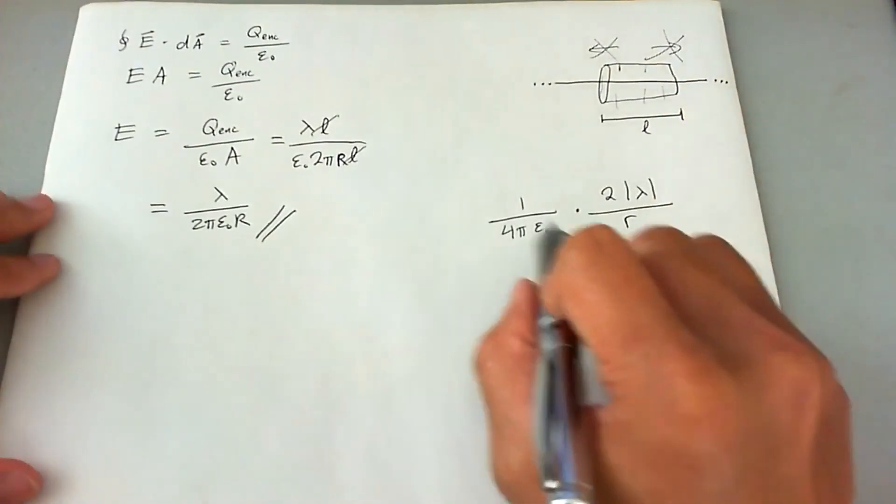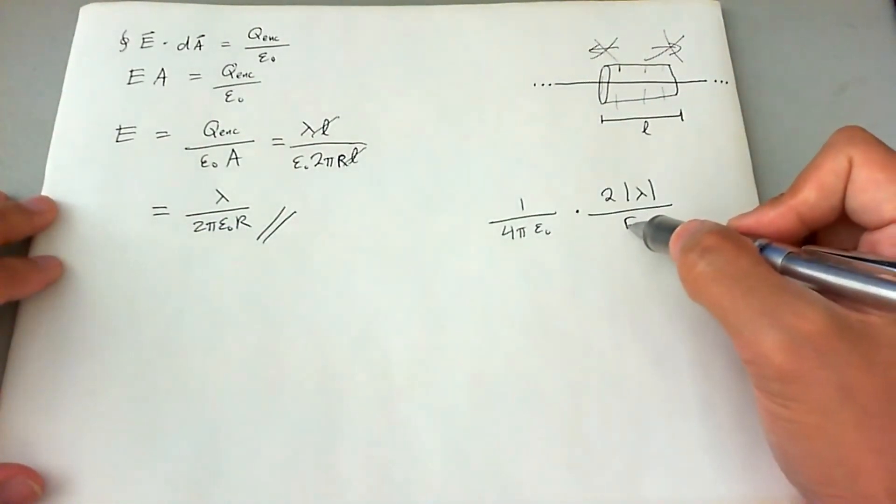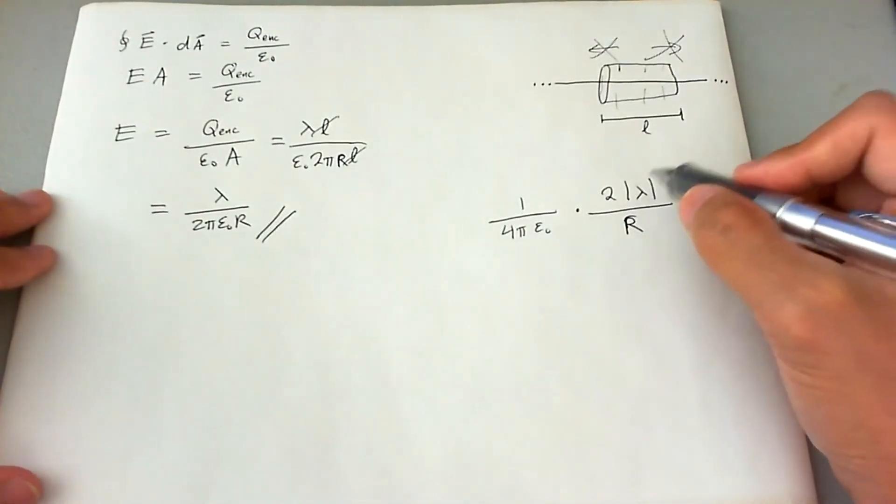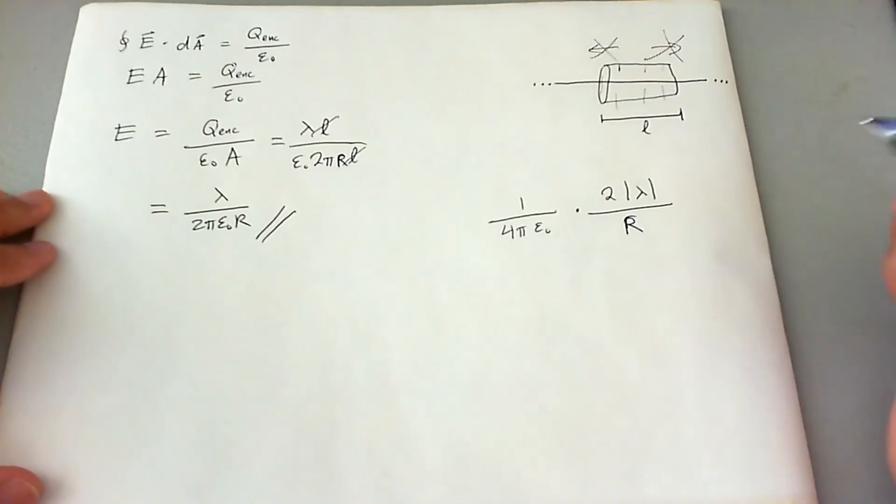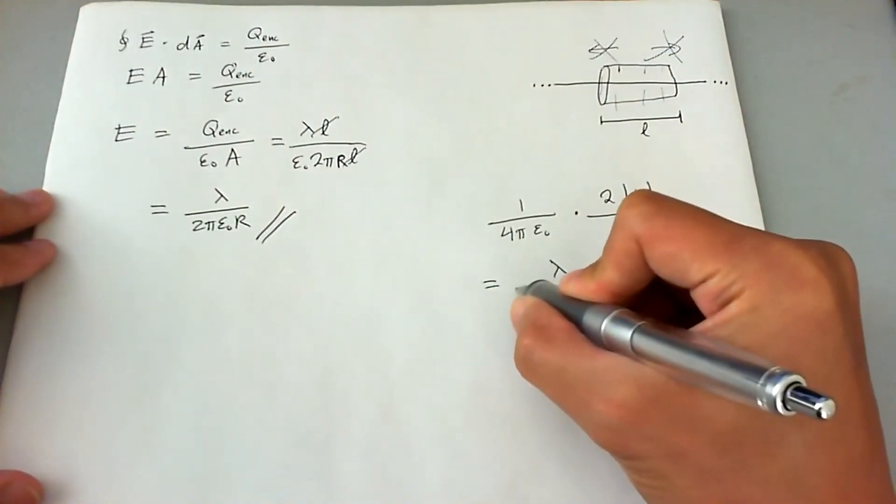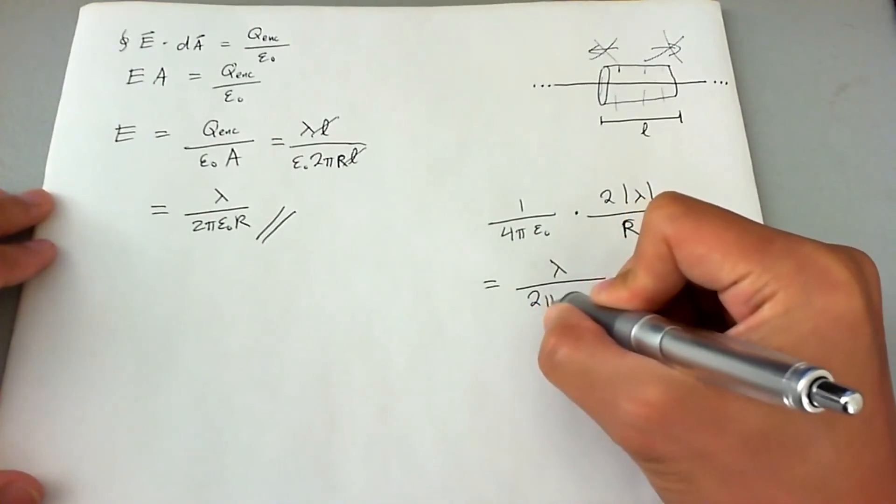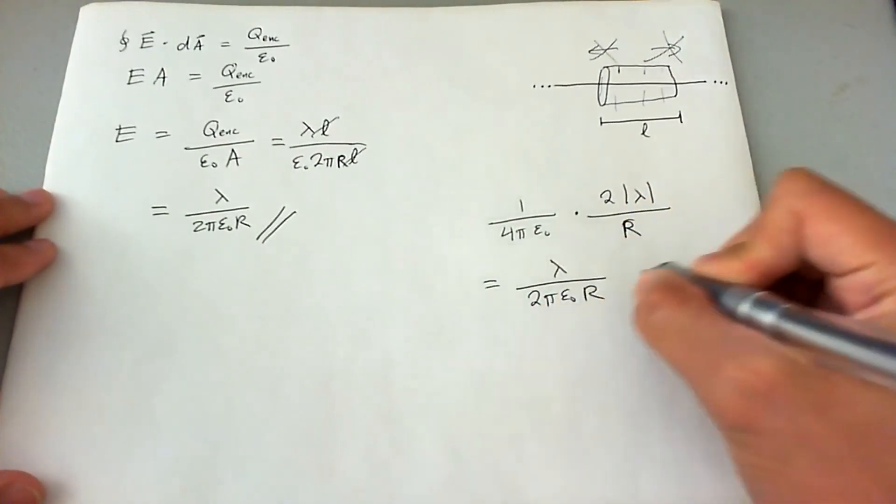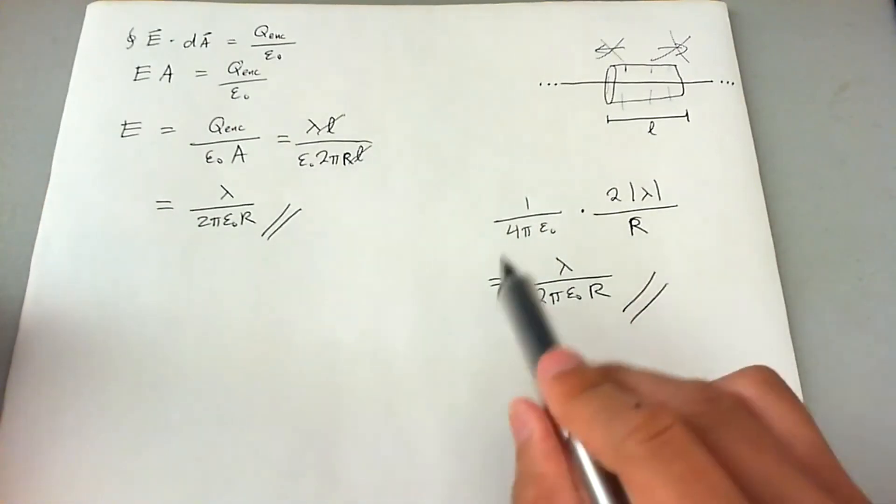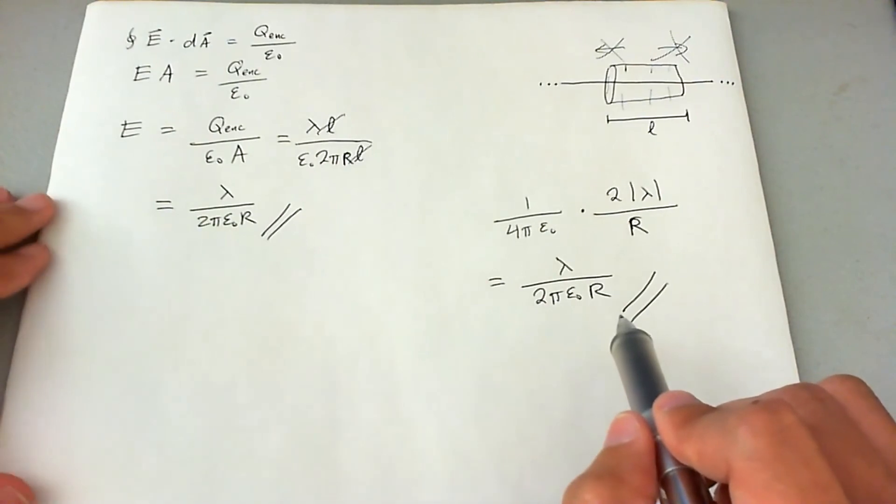So you can see that this actually equals to this if you replace r with big r, and you just assume that lambda is positive, then this ends up being lambda over 2 pi epsilon naught r. And so Gauss's law actually proves the equation that we saw earlier for an infinite line charge with respect to analyzing the E field.